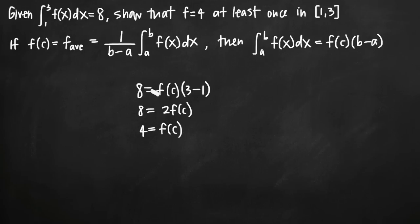What this tells us is we've used the mean value theorem for integrals to show that the function takes on the value 4 at least once in the interval 1 to 3, given that the area under the curve between 1 and 3 is equal to 8. That's how we use the mean value theorem to prove that the function takes on the value 4 at least once in the interval.